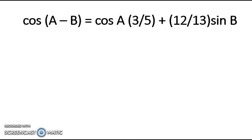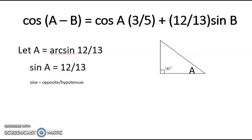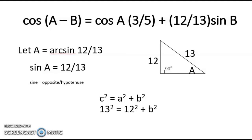Now we are going to solve for cosine A and sine B. We let A equal arcsine 12 over 13, and sine A equals 12 over 13. We know that sine is equal to opposite over hypotenuse. So if we illustrate this using a right triangle, with angle A, the opposite side is 12 and the hypotenuse is 13. We are going to solve for cosine A by first solving the adjacent side using the Pythagorean theorem: C squared equals A squared plus B squared, where C is the hypotenuse and A and B are the legs. Substituting: 13 squared equals 12 squared plus B squared.